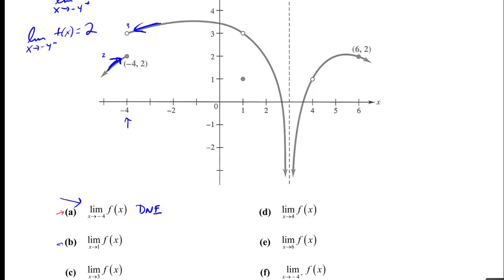The limit as x approaches 1 of f(x): from one side we're coming down, from the other side we're coming up. There is a hole as we get to x = 1, and a redefined point elsewhere, but the limit doesn't care about that. From both sides it's headed for the value 3, so this limit equals 3.